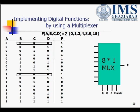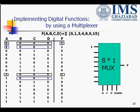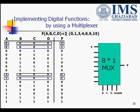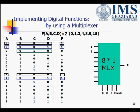When b,c,d = 0,0,0: when a=0 the function value is 1, and when a=1 the function value is 1. Irrespective of a, the function value is 1, so our first input is 1. For b,c,d = 0,0,1: when a=0 the function value is 1, and when a=1 the function value is again 1, so our second input is also 1.